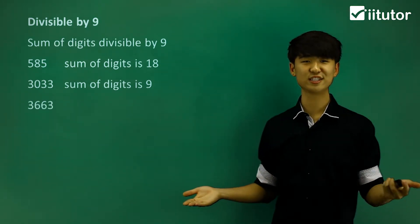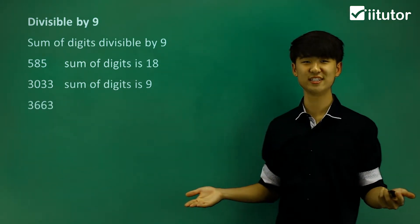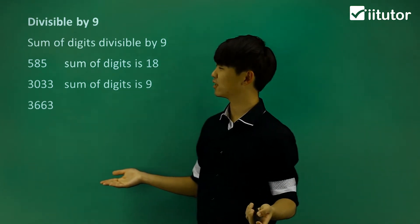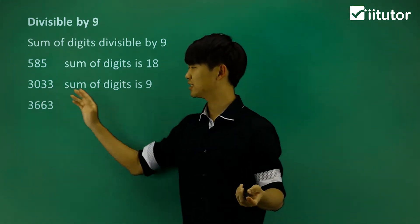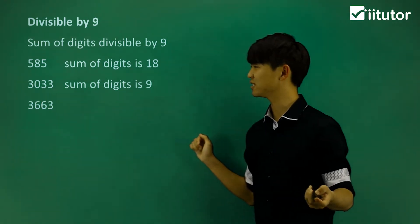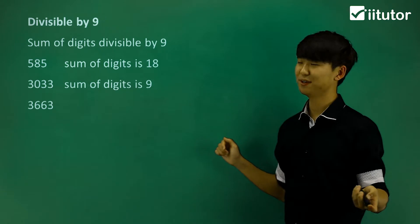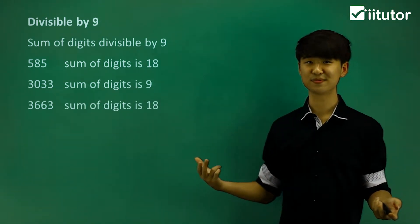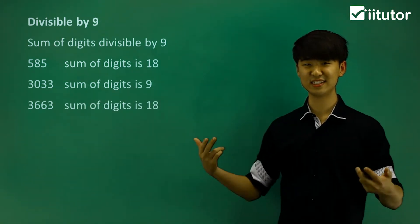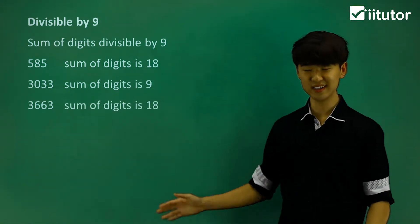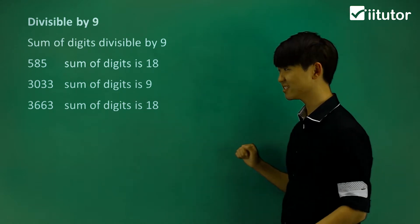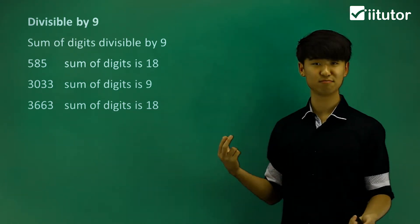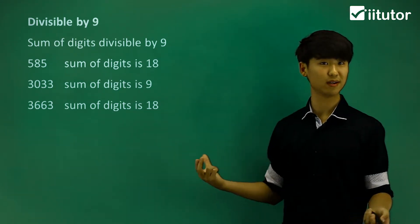Now 3663. If we take a look at the sum, so 3 plus 6 plus 6 plus 3, we get a sum of digits of 18. Now 18 is divisible by 9, so 3663 is indeed divisible by 9.